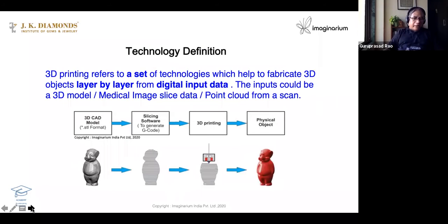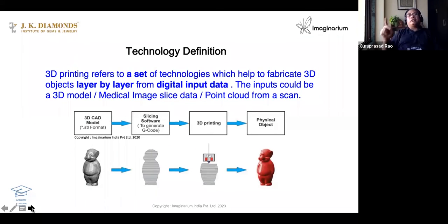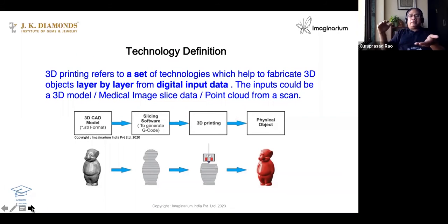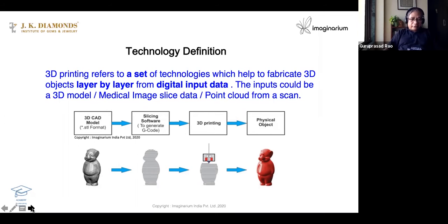How do we define 3D printing? 3D printing refers to a set of technologies — not one — which help to fabricate 3D objects layer upon layer. That is very important. It uses digital input data — that is also very important — layer upon layer from digital input data.